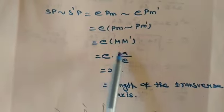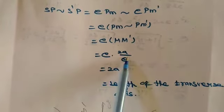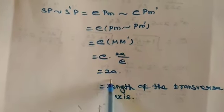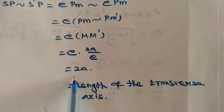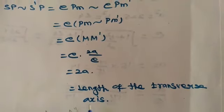So substitute this value here. e into MM dash means MM dash value is 2A by e. So e and e cancel. Reminder is 2A. That is the length of transverse axis. That's all.